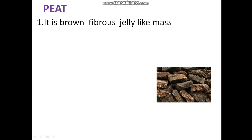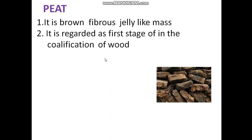Let's have a look at peat. It is a brown, fibrous, jelly-like mass. It is regarded as the first stage of coalification of wood. Coalification means that in the absence of oxygen, wood is converted to peat.